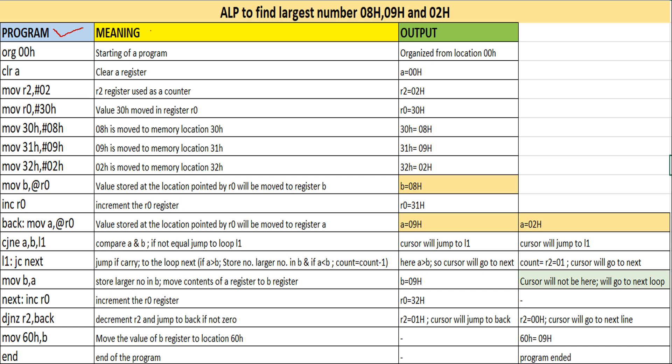Now the program is classified into three different parts. The first part is the program, the second part is the meaning, and the third part is the output. The program starts with the line ORG 00H. This indicates the starting of the program. The ORG origin directive is used to indicate the starting location of the program, so the program is organized from location 00H.